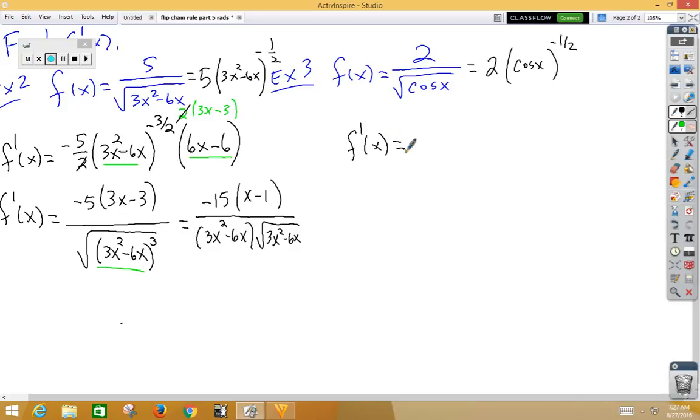if we do the power rule, 2 times negative half would be a negative 1. Don't change the inside function to the negative 3 halves. Multiply by the derivative of cosine, which would be negative sine x.